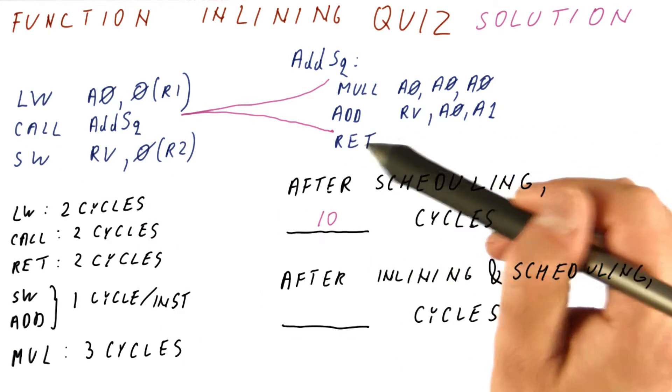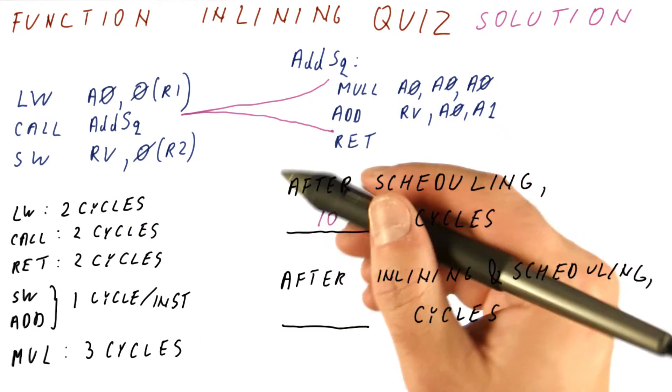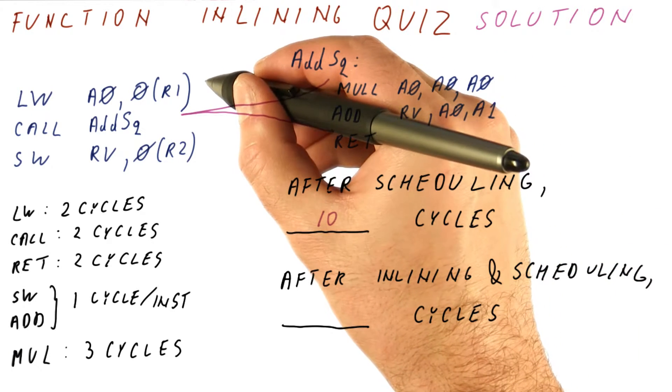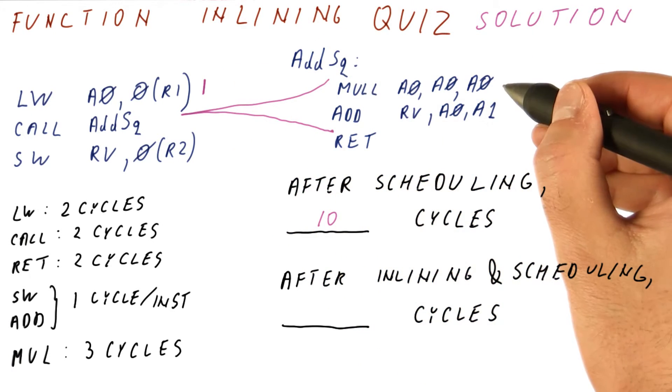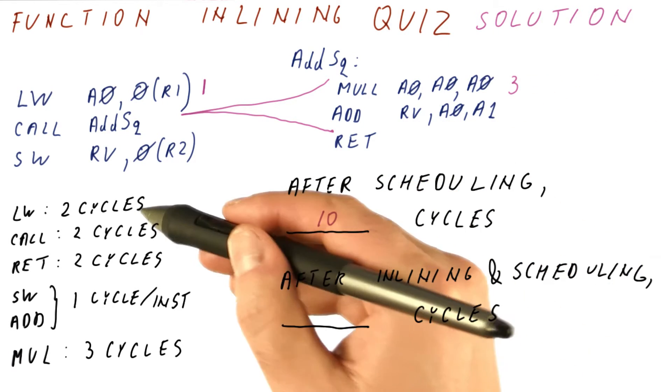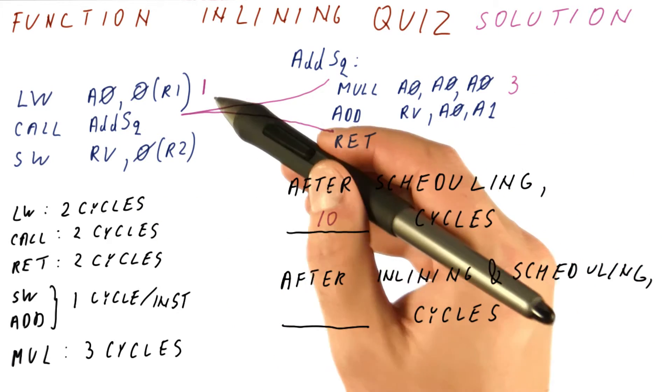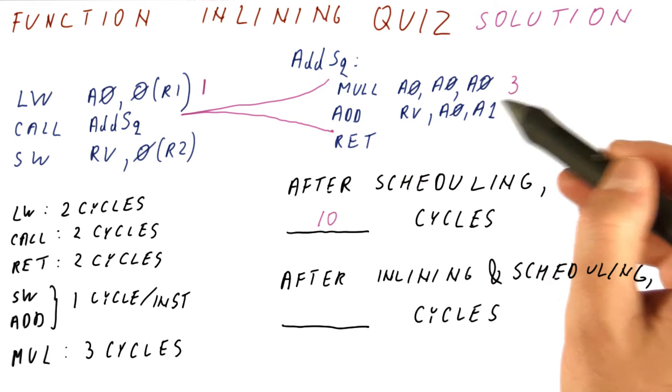However, we have eliminated the call and the return. So now what happens is we have the load begins in cycle one. Next, we will try to do the multiplication. But we can only do it in cycle three because the load needs to produce the value for two cycles in cycles one and two before we can use it.